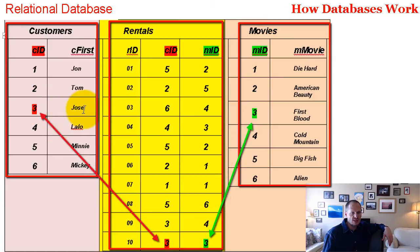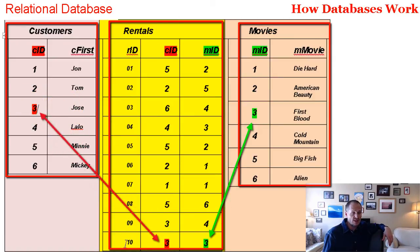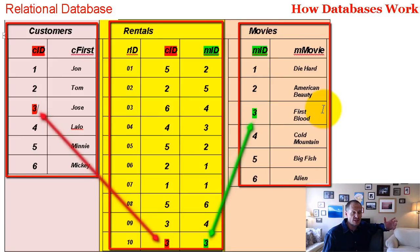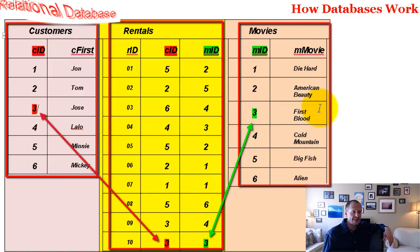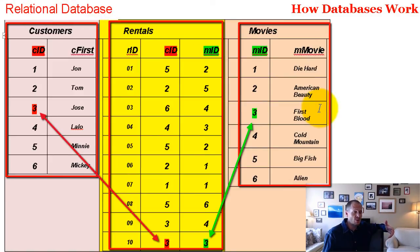So Jose — customer ID three — in rental transaction number 10, rented movie ID three, and movie ID three is First Blood. That's how relational databases work: the tables relate to each other. And that's the first step to understanding and building a database.